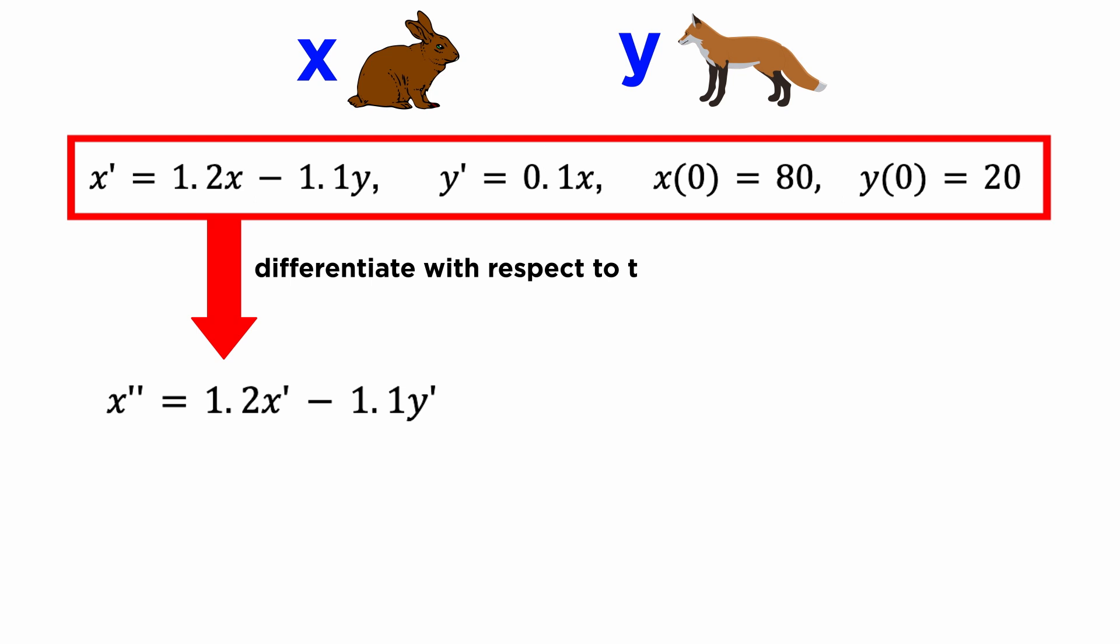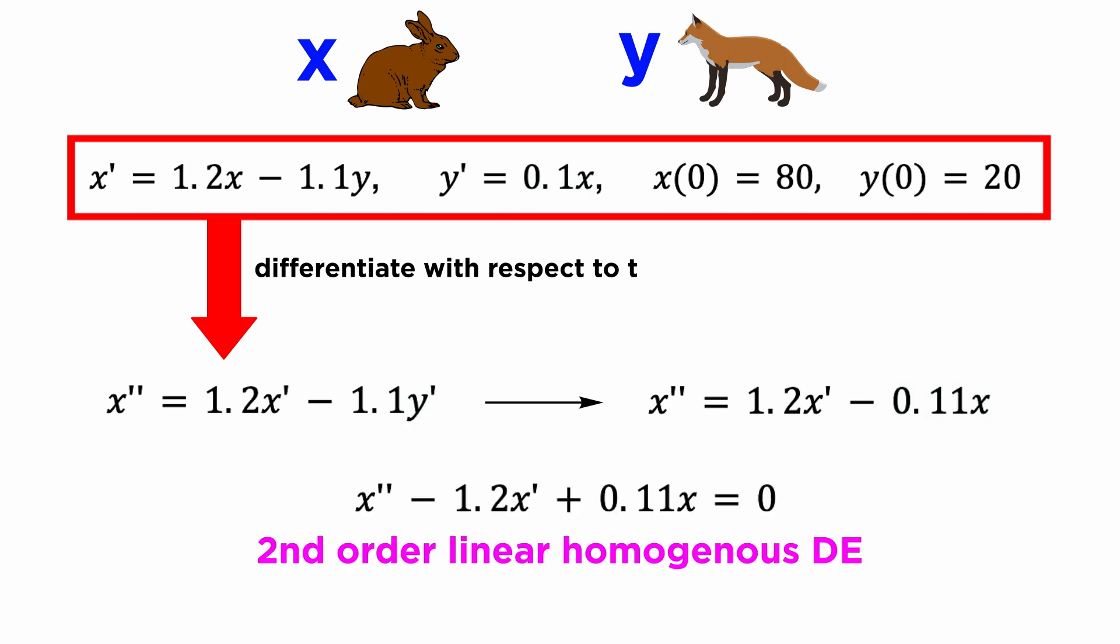Notice that if we differentiate our dx/dt equation with respect to time once, we will produce a dy/dt term on the right side, and we can then substitute in our second equation to eliminate y entirely, and we get a second-order linear homogeneous differential equation with constant coefficients.